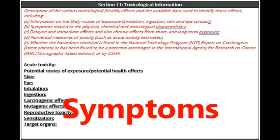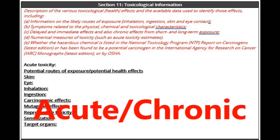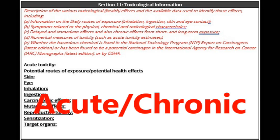Symptoms are the reactions to chemicals and in some cases are ignored by exposed employees. It is important to know what these symptoms are to get care quicker. The section also covers delayed and immediate effects, as well as chronic effects from short and long-term exposures. There are two types of effects: acute and chronic. Acute means the effect occurs quickly; chronic may take decades to occur.